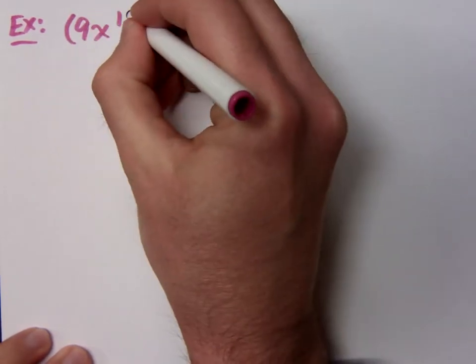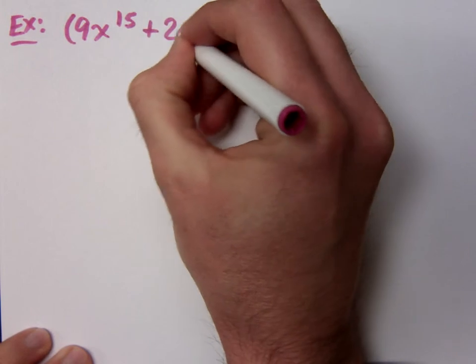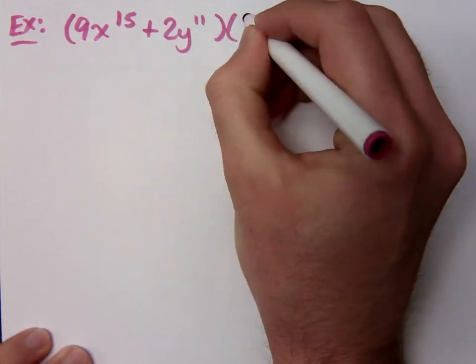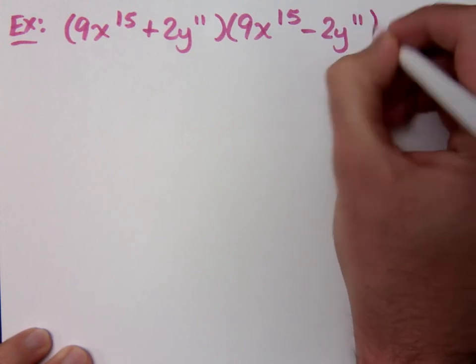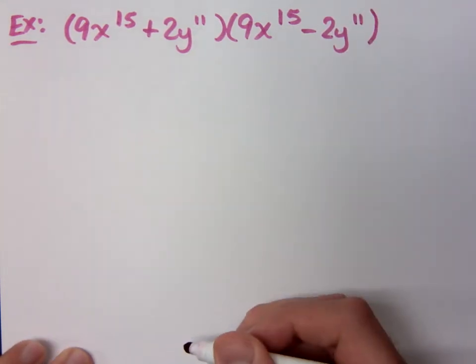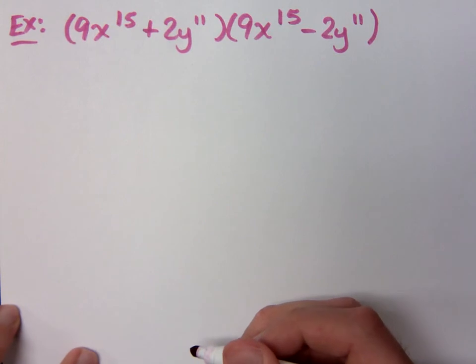All right, let's try a few more examples where we have to work with the difference of squares. Now, understand that on your test, it's all going to be mixed up. So you have to be able to determine what's the difference of squares, and what's the kind of setup where you're squaring a binomial.